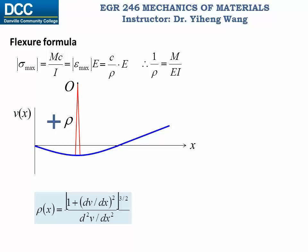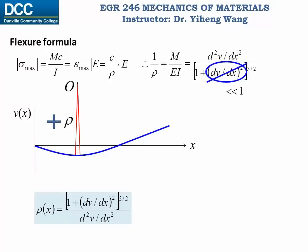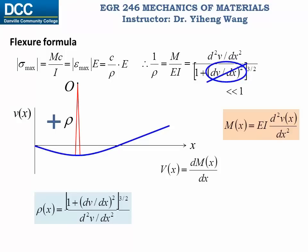Here E is Young's modulus and I is the area moment of inertia of the cross-section. From calculus, 1 over rho also equals the second derivative of v with respect to x, where v is the deflection function of x. Since the deformation is small, the squared first-derivative term in the denominator is negligible compared to 1 and can be eliminated. After this simplification, we derive that the bending moment as a function of x equals EI times the second derivative of the deflection function. Since the shear force function is the derivative of the bending moment function, the shear force function equals EI times the third derivative of the deflection function.